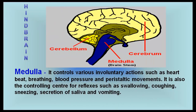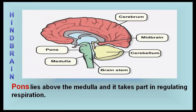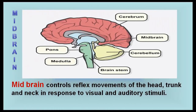The medulla of the hindbrain controls various involuntary actions such as heartbeat, breathing, blood pressure, and peristaltic movements. It is also the controlling centre for reflexes such as swallowing, coughing, sneezing, secretion of saliva, and vomiting. The pons of the hindbrain lies above the medulla and takes part in regulating respiration. The midbrain controls reflex movements of the head, trunk, and neck in response to visual and auditory stimuli.